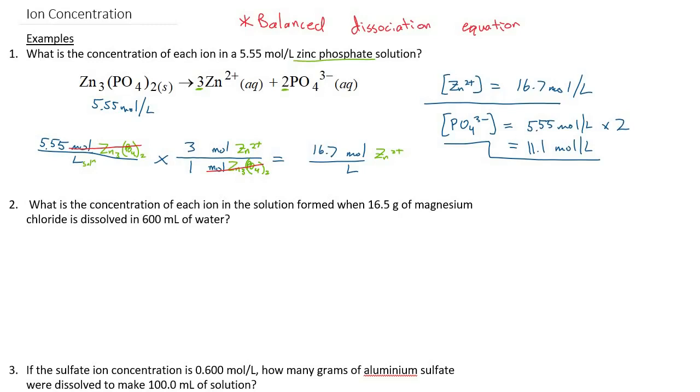Example number 2. What is the concentration of each ion in the solution formed when 16.5 grams of magnesium chloride is dissolved in 600 milliliters of water? I'm going to start with the balanced dissociation equation right away. This is what's happening when we dissolve it, and here we can see our ions forming.